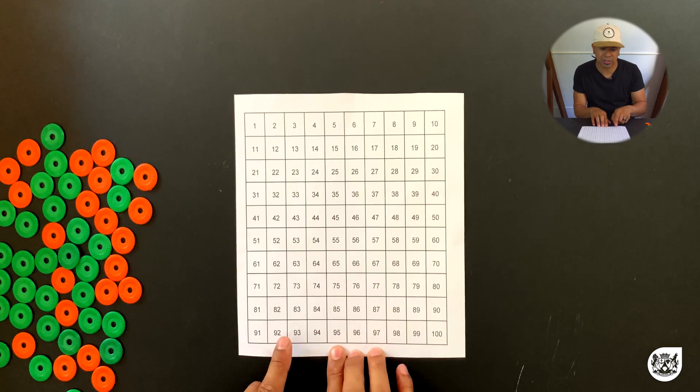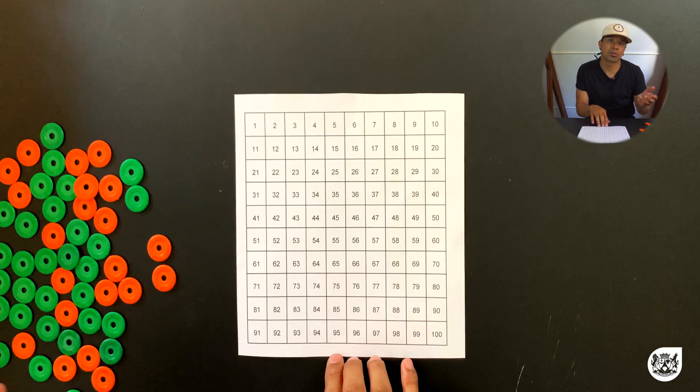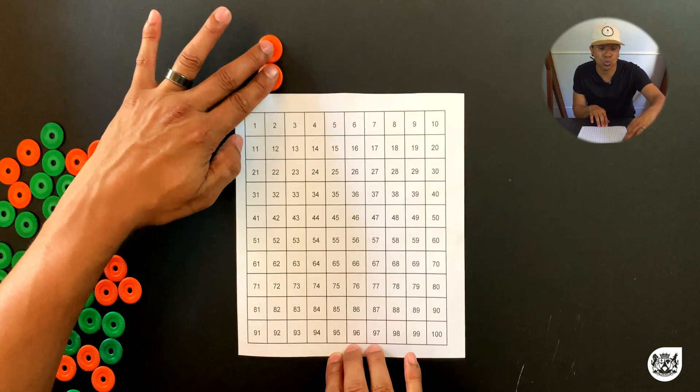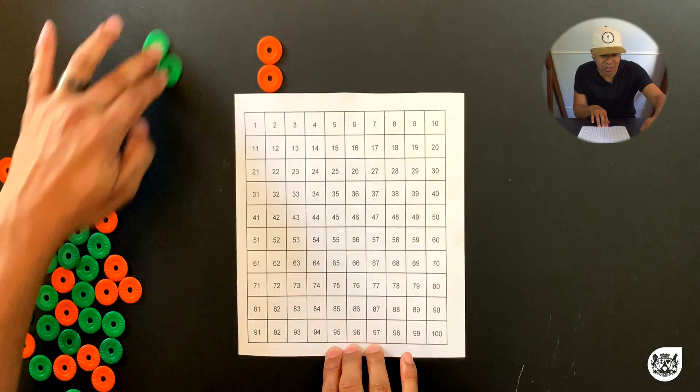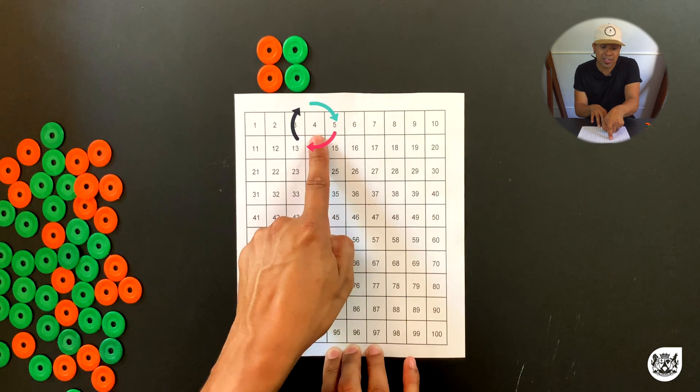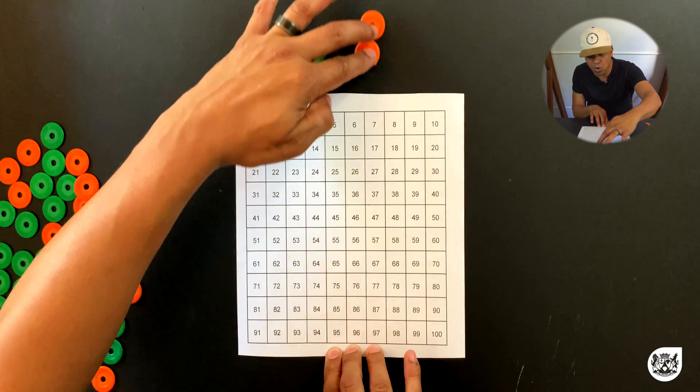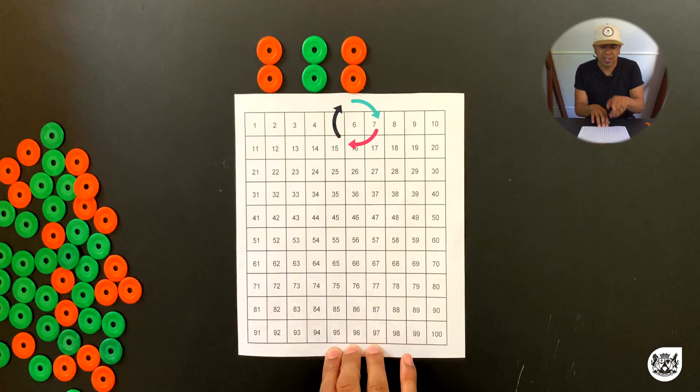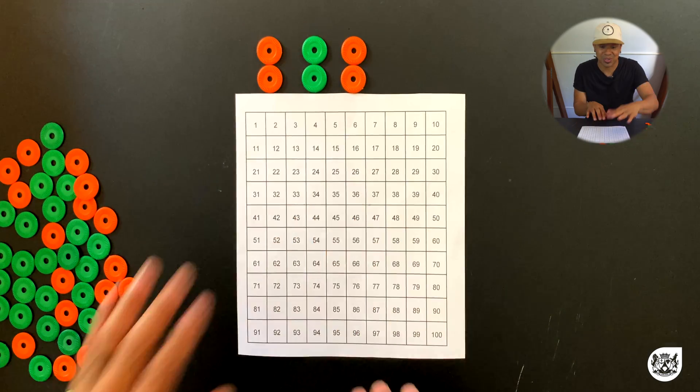Now remember when we use the counters we started from zero and we counted in groups of two. So it went 2, and over here on the number grid you can see there's a 2. And we added two more and then we move to 4, and over there we can see the 4 placed over there. And then we added two more, and then we'll see we have 6 counters and we move to 6.